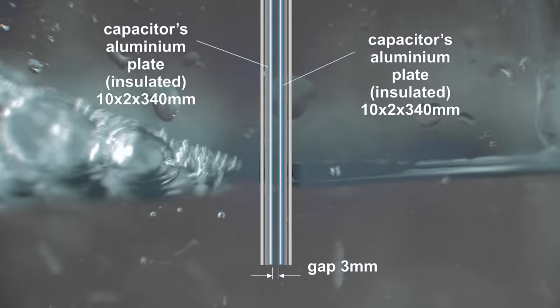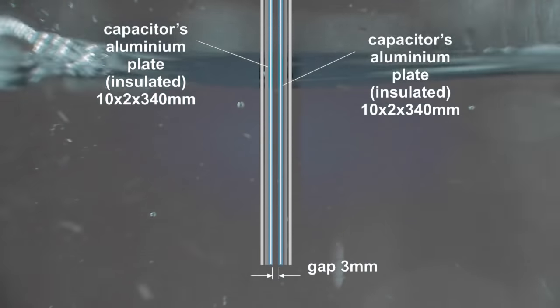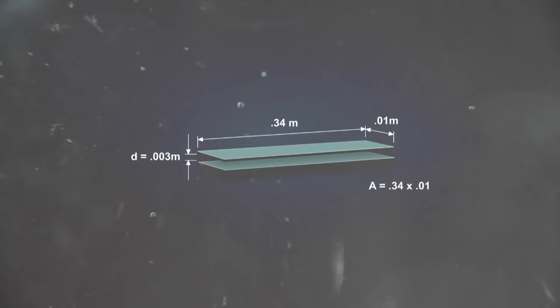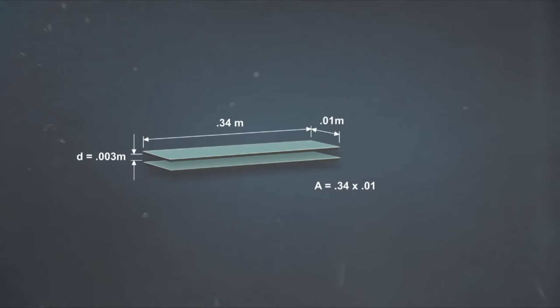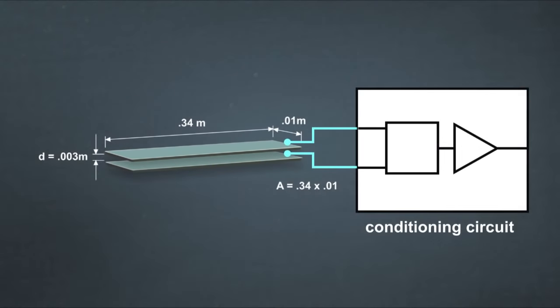The sensor is basically made of two plates that constitute a capacitor and are connected to a conditioning circuit which measures the capacitance.